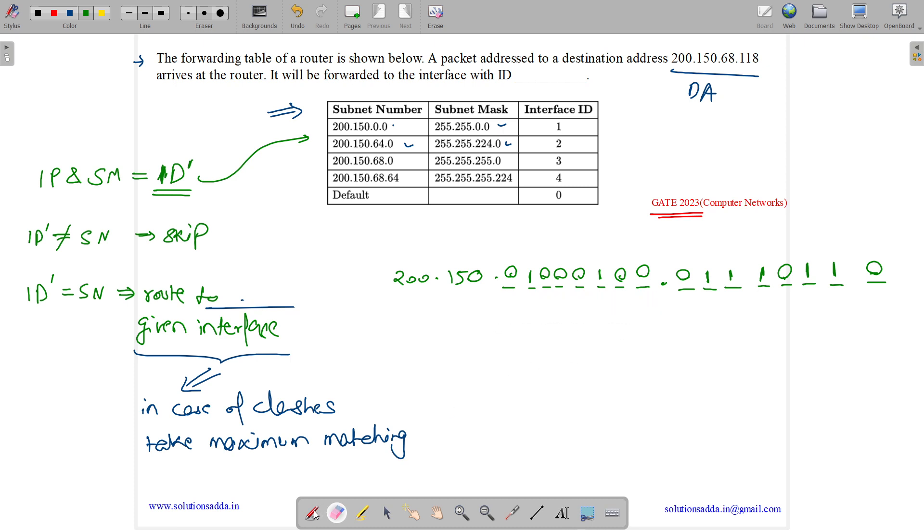Now the majority part is done. We need to check it from top to bottom. If we have 255.255.0.0, 255 means all ones. These are all zeros. When we do AND of 255 with any number, we will get the same number. So we will have 200.150 and here it will be 0 and here it will be 0. Let us see whether it matches or not. Yes, it matches. This one matches.